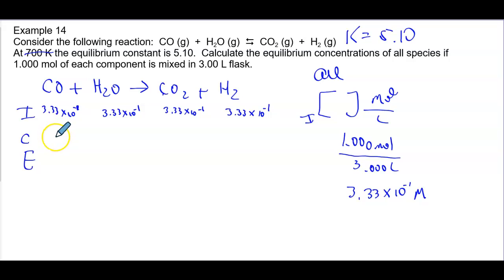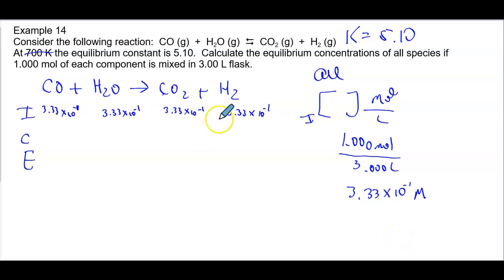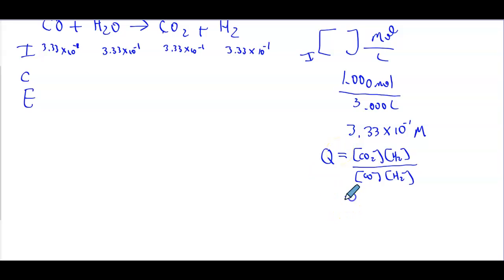The change row will involve plus or minus some coefficient times X. We have no zeros in our initials, so we don't know which side needs to increase. We have to figure out which way equilibrium will shift based on Q versus K, just like in the other problems. To find Q, we use the same expression as K but at a non-equilibrium position — products over reactants. None are raised to a coefficient because all have coefficient 1. Q equals 3.33×10⁻¹ times 3.33×10⁻¹